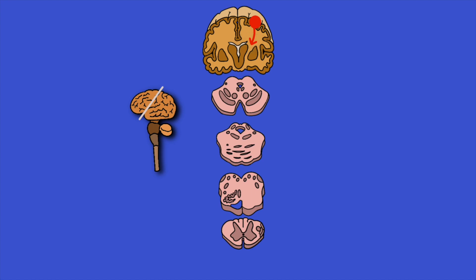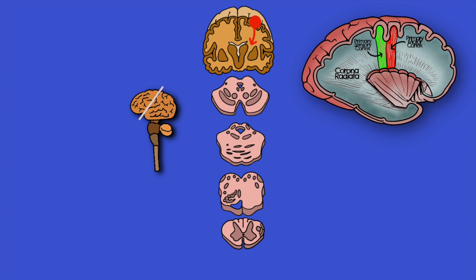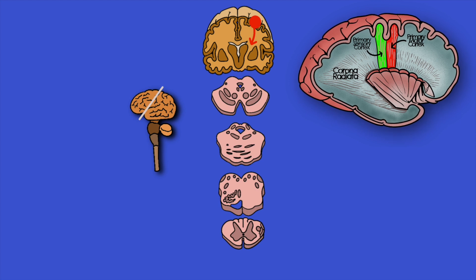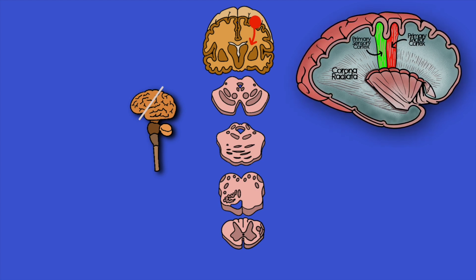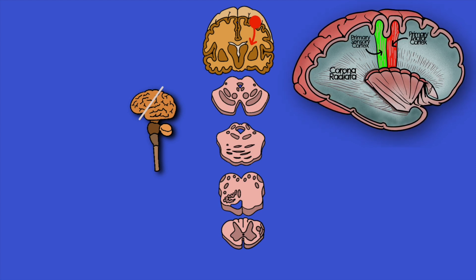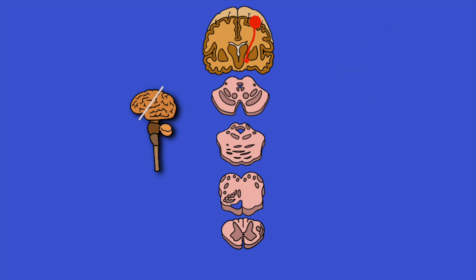Now we know the origin of our upper motor neurons. Their axons travel through a region known as the corona radiata — myelinated axons running between the cortex and the brainstem — which we can see represented here alongside the primary sensory and primary motor cortex. These fibers then converge and travel through a very distinctive region of the cerebrum called the internal capsule, which we'll now take a closer look at.